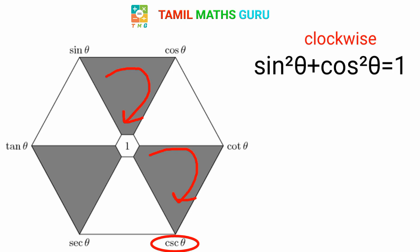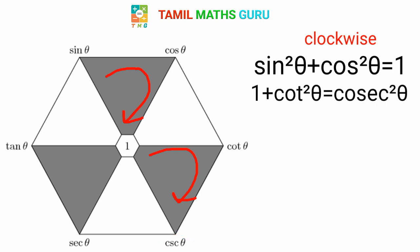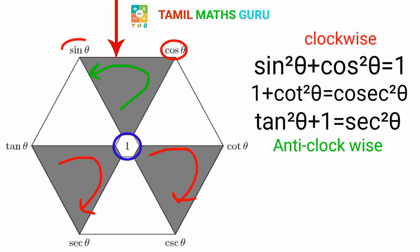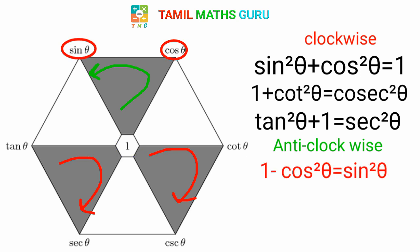tan²θ plus 1 is equal to sec²θ — using the clockwise direction. Anti-clockwise: 1 minus cos²θ is equal to sin²θ. Anti-clockwise is equal to 3 identities. sec²θ minus 1 is equal to tan²θ.